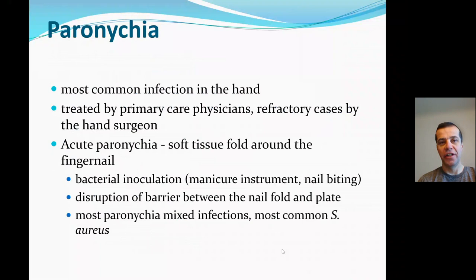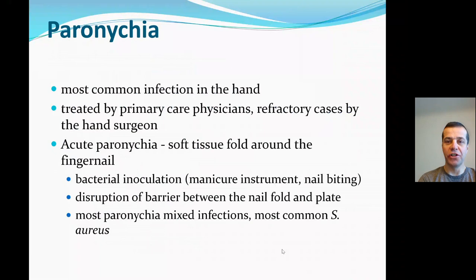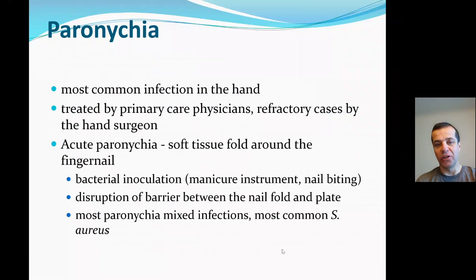Paronychia is most commonly treated by primary care physicians. Only refractory cases will be sent to see a hand surgeon. In acute paronychia, it's essentially an infection of the soft tissue fold around the fingernail. Bacterial inoculation usually happens through a small injury via manicure instruments or nail biting, disrupting the barrier between the nail fold and the nail plate. The most common agent is Staphylococcus aureus.